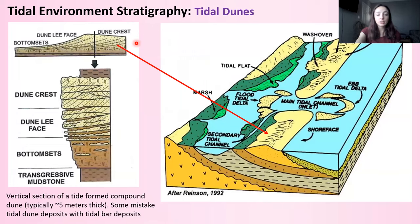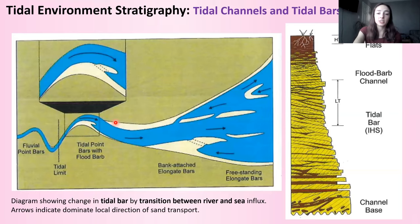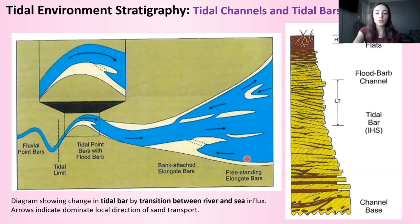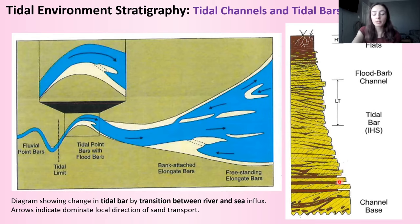Tidal dune deposits include evidence for ebb currents and bi-directional flow, mostly foresets in the flood current direction, with evidence for mud draping on the lower lee base of the dune as well as the bottomsets, and ripples are typically common in the bottomsets as well. For tidal channels and tidal bars, since we've already discussed fluvial processes, tidal point bar stratigraphic columns should look similar to fluvial point bar columns, however with bi-directional flow indicators showing both the flood current direction and the fluvial and ebb flow direction.